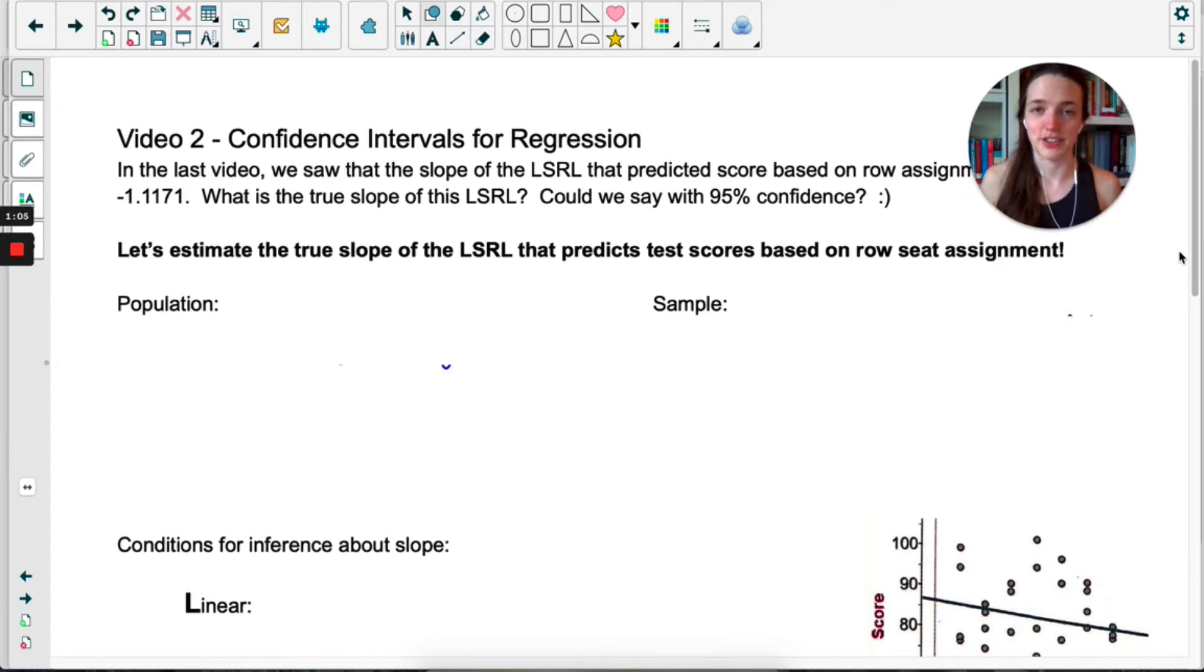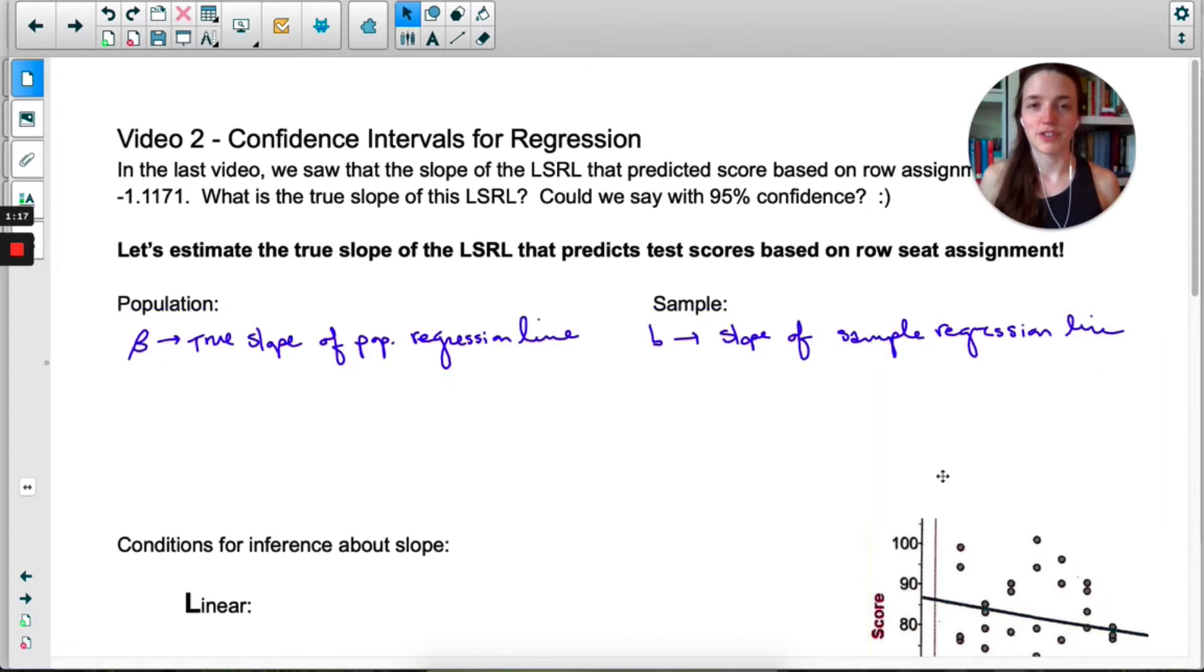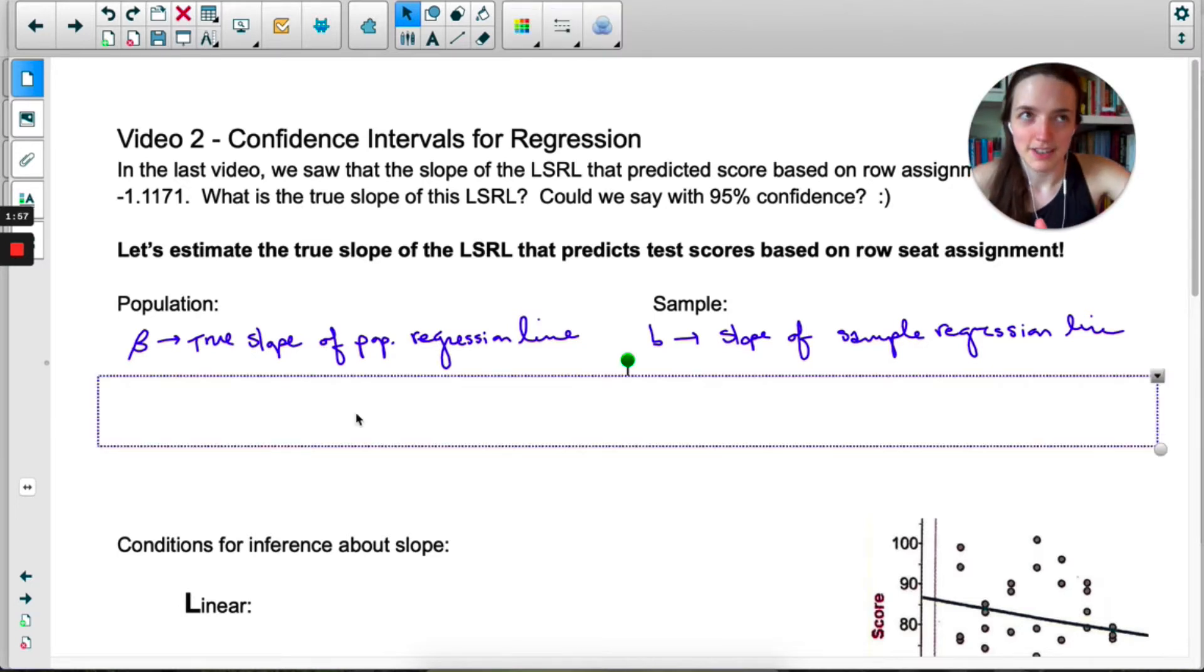Before we get to the confidence interval, let's go over the symbols we're going to use. For our population we use the Greek letter beta, capital B like a cursive B, to represent the true slope of the population regression line, and lowercase b for the slope of the sample regression line. When we deal with means, the Greek letter is the population and lowercase is the sample. Same with standard deviations.